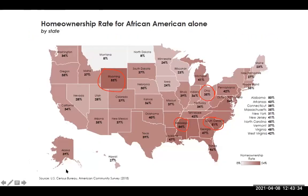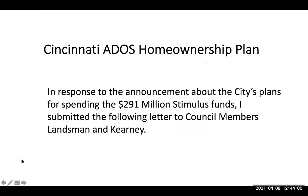Home ownership rates for African Americans alone by state: the highest I found were Mississippi at 54%, Wyoming at 53%, and South Carolina at 51%. Everything else was lower. Ohio is at 35%. This brings us to the Cincinnati American Descendants of Slaves homeownership plan.